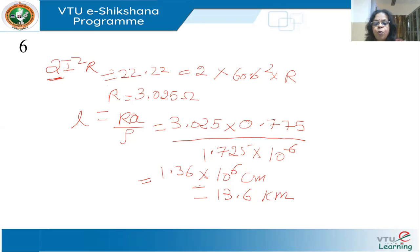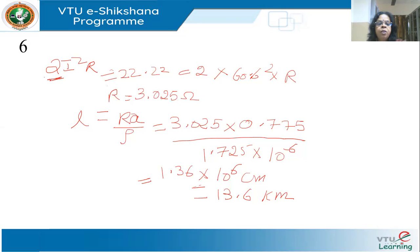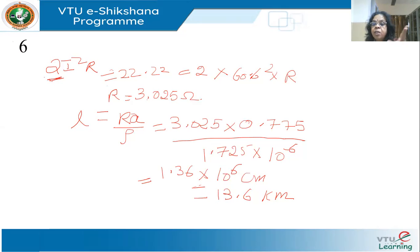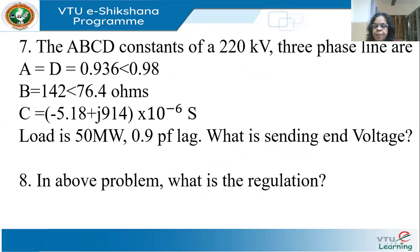Therefore, for these specifications, the line length cannot exceed 13.6 kilometers. Be careful: if you don't multiply by 2 for the two conductors, R would be double (the loop resistance), and you'd need to divide the length by 2. Be careful how you solve in the case of single phase.